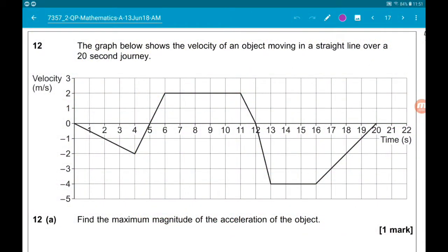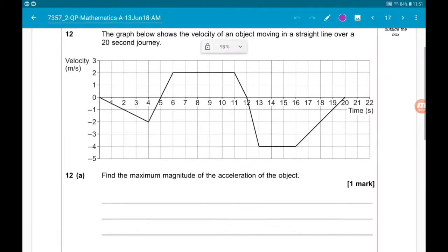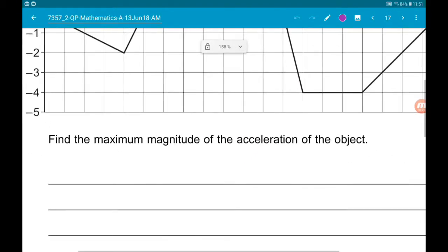Okay, question 12. We have a velocity-time graph, so the graph below shows the velocity of an object moving in a straight line over a 20 second journey. Part a wants us to find the maximum magnitude of the acceleration of the object.